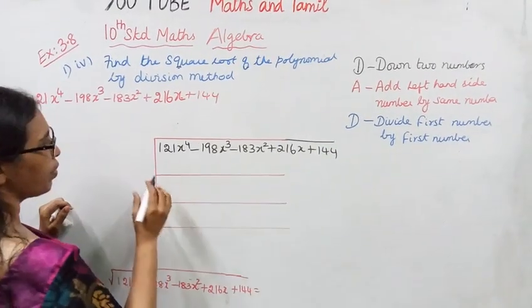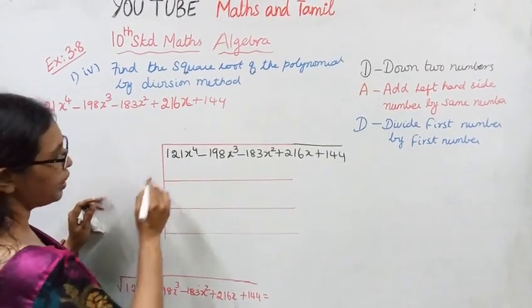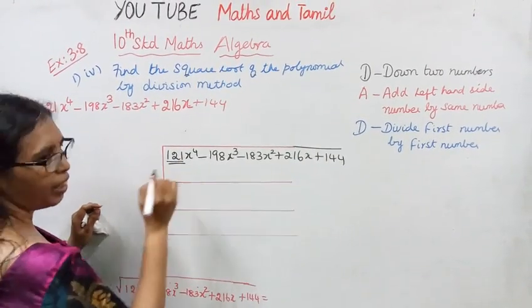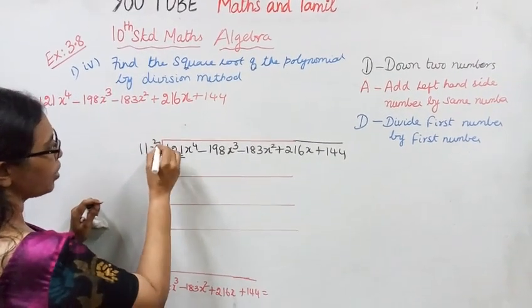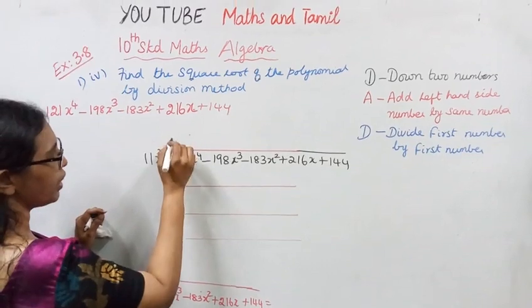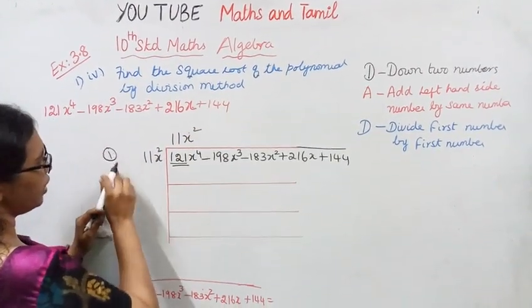First, first. First, first, then again I will open up. First, 121. 121 is 11. 121x⁴ is 11x². I know it says there is no matter. 11x². This is the first step.